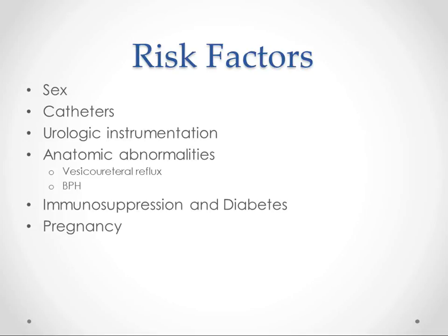Some of the risk factors for urinary tract infections are sexual activity, any type of catheters — basically anything that you put in the urethra or anywhere in that area is a risk factor. There are also some anatomical abnormalities like vesicoureteral reflux, which you'll see in kids that get UTIs over and over again. They have an incompetent valve from the ureters down into the bladder, and the ureters come in at a bad angle so urine can reflux back into the ureters.